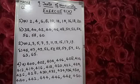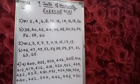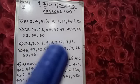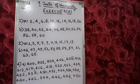Now let's see question number 2: write down all the odd numbers between the given range. In question A, between 1 to 20, the odd numbers are: 1, 3, 5, 7, 9, 11, 13, 15, 17, and 19. These are the odd numbers lying between 1 to 20.